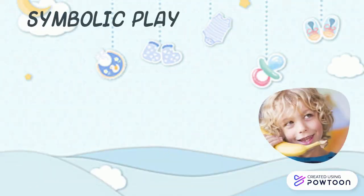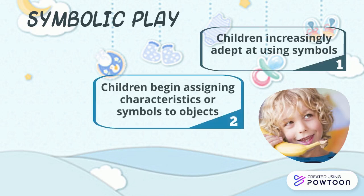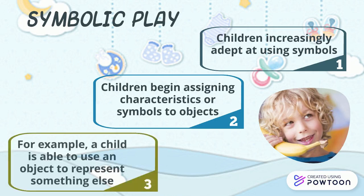The fourth key feature of the pre-operational stage is Symbolic Play. In the pre-operational stage, children become increasingly adept at using symbols, as evidenced by the increase in playing and pretending. Children begin assigning characteristics of symbols to objects and can project the properties of one object onto another. For example, a child is able to use an object to represent something else, such as pretending a broom is a horse.